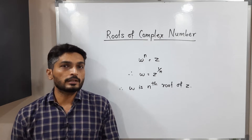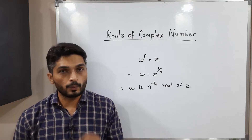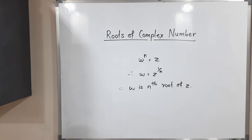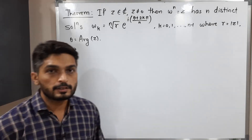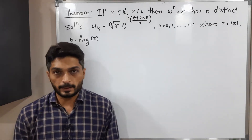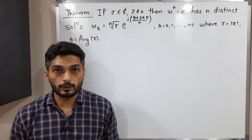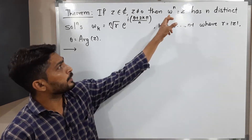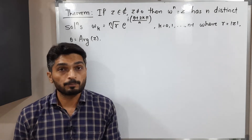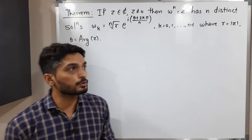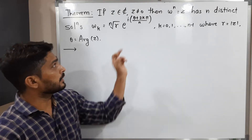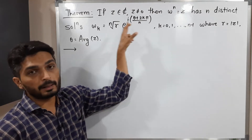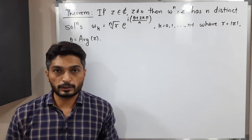Let us discuss one important result about the nth root of a complex number. This result says: if you have any non-zero complex number Z, with the relation W raised to n is equal to Z, then it will have n number of distinct solutions. The solutions are given by W_k is equal to the nth root of r times e raised to i(theta plus 2k pi) by n, where k varies from zero to n minus one.